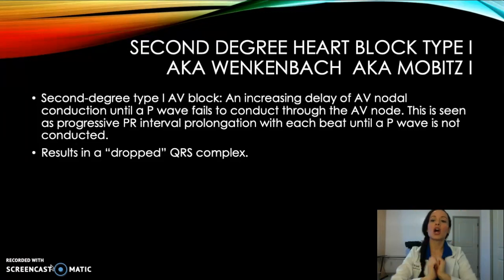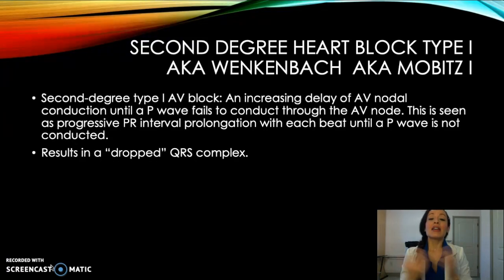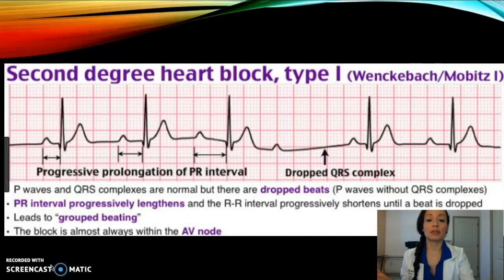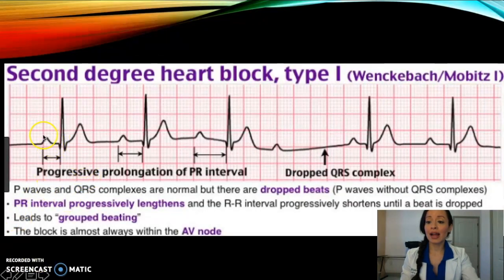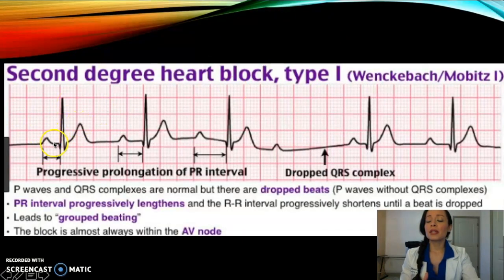In second degree type one AV block, there's an increase in delay between AV nodal conduction until basically the P wave fails to conduct through the AV node, and eventually you get a dropped QRS complex. The P wave is the result of atrial depolarization — the atria firing — and the QRS complex is the result of ventricular depolarization, basically the ventricles firing.